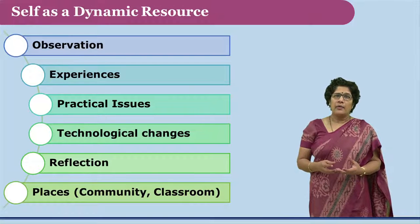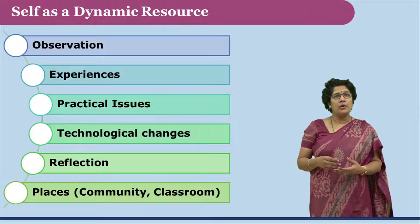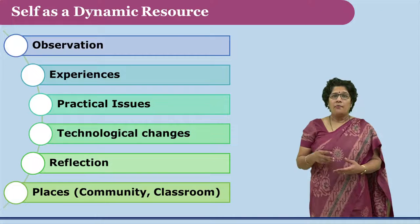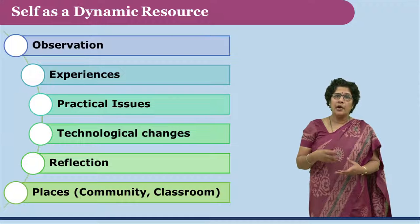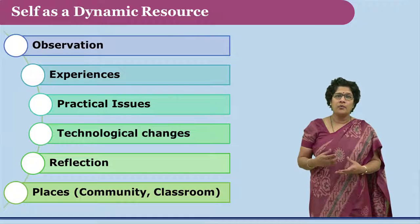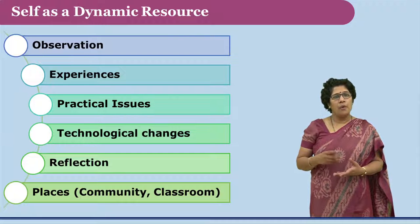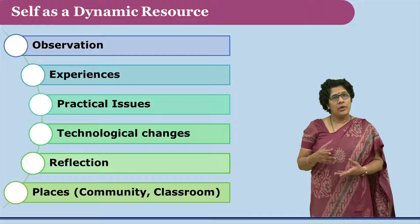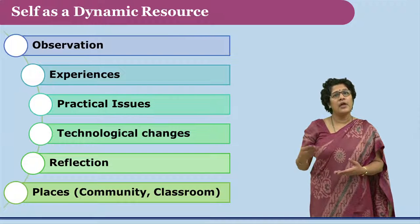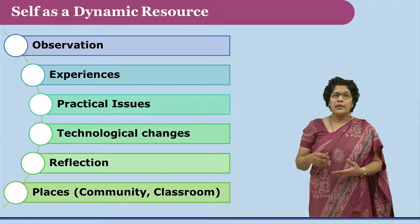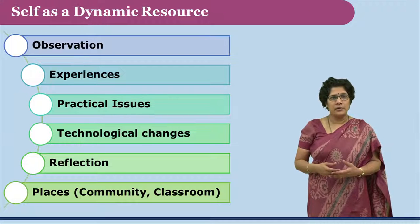Now the researcher has to finalize his or her own research problem. Amongst the various resources, the researcher himself or herself forms an important source. The researcher has the ability to observe things around and to experience current practices. The researcher reflects upon his or her practices or even others' practices, and this reflection helps in reaching the final title of the research.